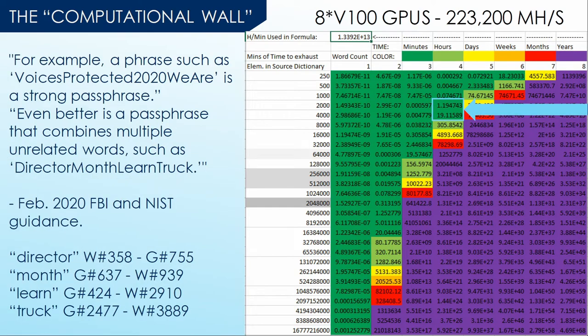I should also mention the recommendation in the absolute latest NIST and FBI guidance — they suggested the passphrase 'Voices Protected 2020 We Are', and then suggested an even better one: 'Director Month Learn Truck', because the words are unrelated. Well, those words might seem unrelated, but they all have one thing in common: they're all eye-searingly common. The rarest word in there is 'truck', and that isn't in the top 4,000 regardless of which list you choose. Four common words are not safe from offline cracking.